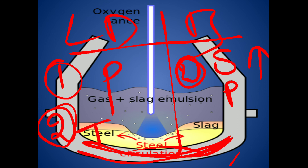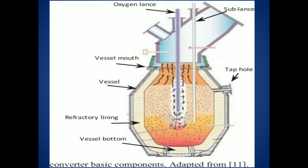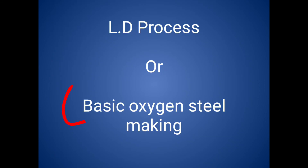For exam purposes: the LD process is the Lynch and Donna Winch process of steel making, in which oxygen is blown from the top of the converter. That is why it is also called basic oxygen steel making. This topic is very important from an exam point of view.